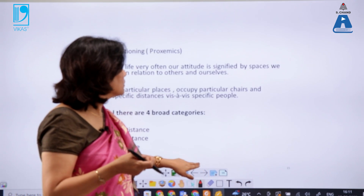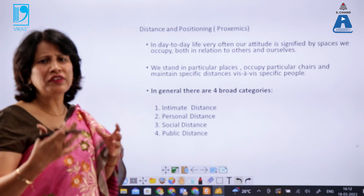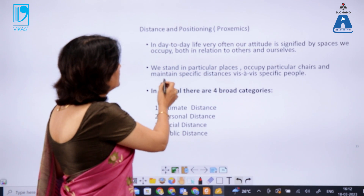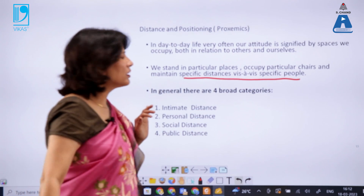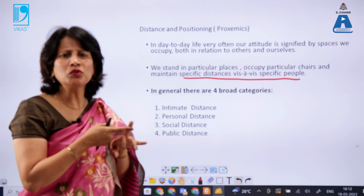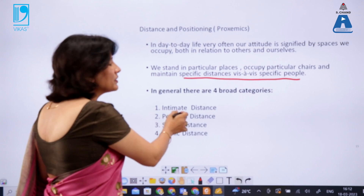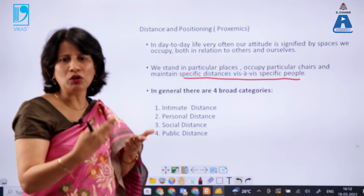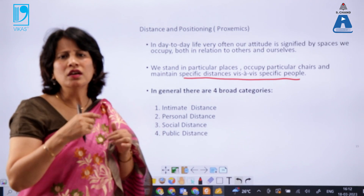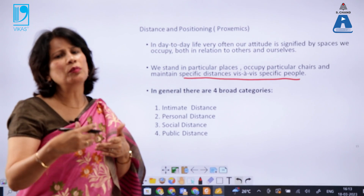In day-to-day life, our attitude is signified by the spaces we occupy — both in relation to others and ourselves. We stand in particular places, occupy particular chairs, and maintain specific distances with specific people. There are four broad categories of space. Proxemics is the term given to how we communicate when we occupy certain spaces in our professional and personal lives: intimate distance, personal distance, social distance — which we all became familiar with during COVID — and public distance.